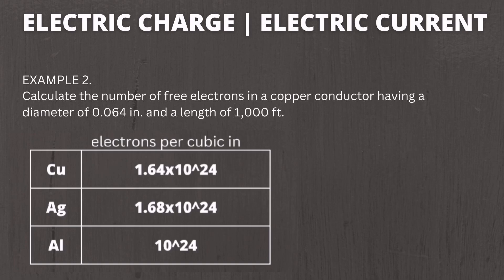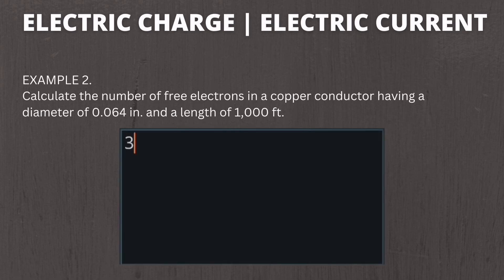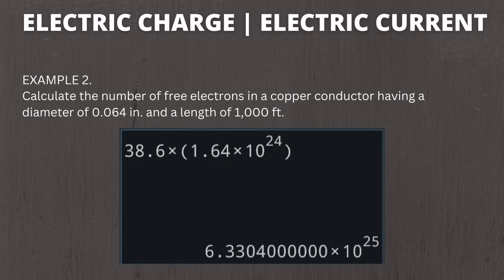Since the conductor is copper, we use the free electrons per cubic inch value from the table. To get the total free electrons, multiply the volume by the table value: 38.6 cubic inches multiplied by 1.64 times 10 raised to 24 electrons per cubic inch. The result is 6.33 times 10 raised to 25 free electrons in a copper conductor with a diameter of 0.064 inch and length of 1000 feet.